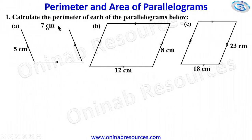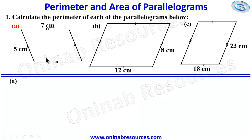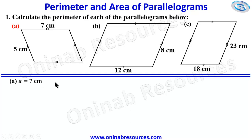Problem 1: Calculate the perimeter of each of the parallelograms below. We have the first, second, and third parallelograms. Starting with part A — for your information, you can choose any side to be A and B. So we identify A to be 7 cm and B to be 5 cm.